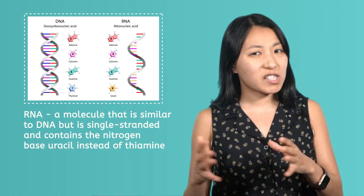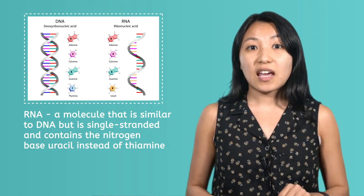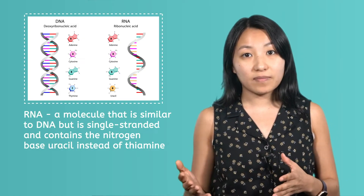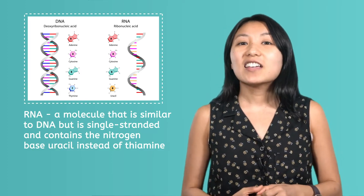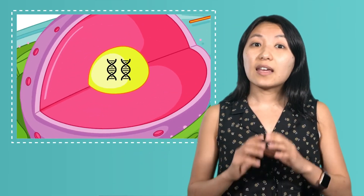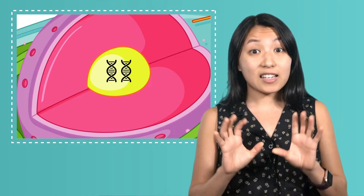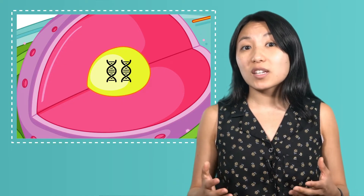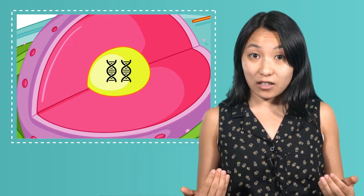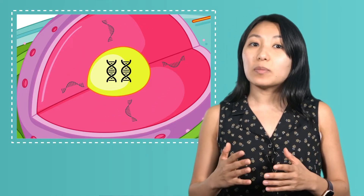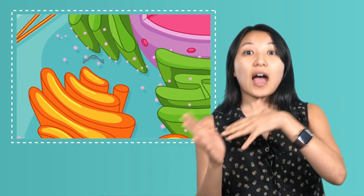RNA, or ribonucleic acid, is similar to DNA, but it is single-stranded and contains the nitrogen base uracil instead of thymine. There are multiple kinds of RNA with specialized jobs, and mRNA, or messenger RNA, is responsible for transcription. You might be thinking: what do we need mRNA for if we have DNA? Doesn't this seem like an unnecessary step? Well, DNA never leaves the nucleus. You can think of the nucleus as a vault that keeps all of the cell's valuable information safe and organized. Since DNA can't leave, mRNA's job is to act as a middleman, copying code directly from the DNA in the nucleus and bringing it to the ribosomes.